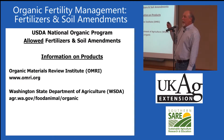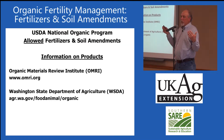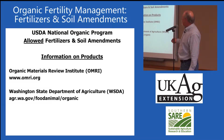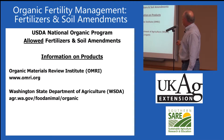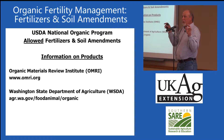Adam mentioned this, but I want to reemphasize two key sources. If you're doing research and trying to figure out what's allowed, go to the OMRI website — the Organic Materials Review Institute — and the Washington State Department of Agriculture. Both publish extensive directories and databases of allowed products for use in certified organic production.